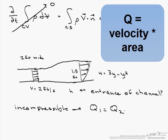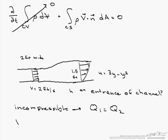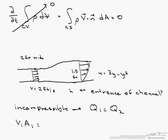Now with our uniform velocity, we can say v1 A1, there's our Q1, equals the integral over A2 of our u dA.